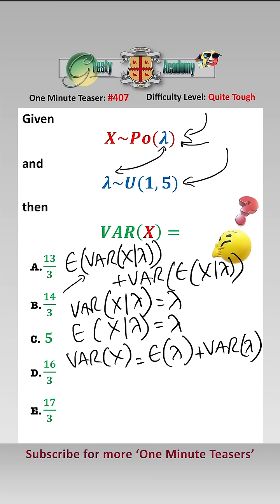The expected value of a uniform distribution is equal to the average of the two endpoints of the range, which is (1 + 5) / 2, which equals 3.